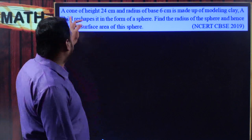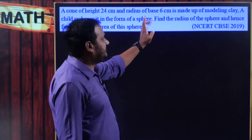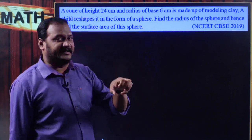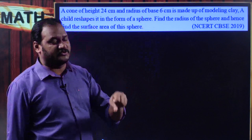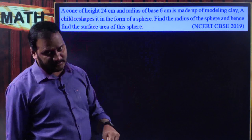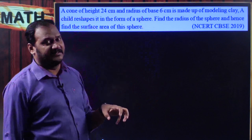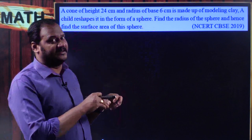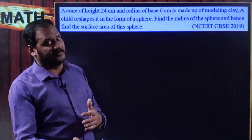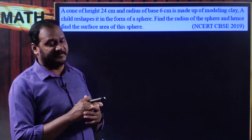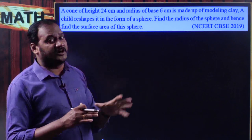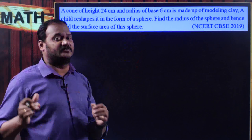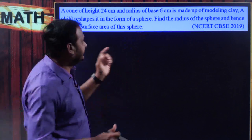Here the cone is transformed into a sphere. With the same material a sphere has been formed. That means the volume of the first shape should be the same as the volume of the second shape.